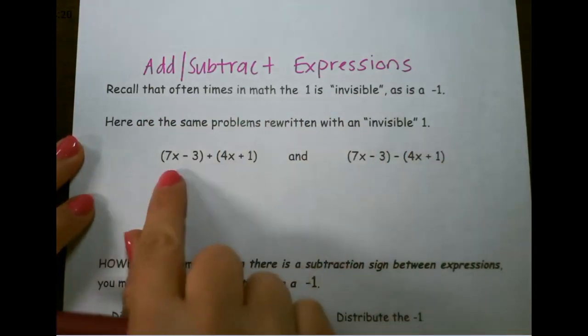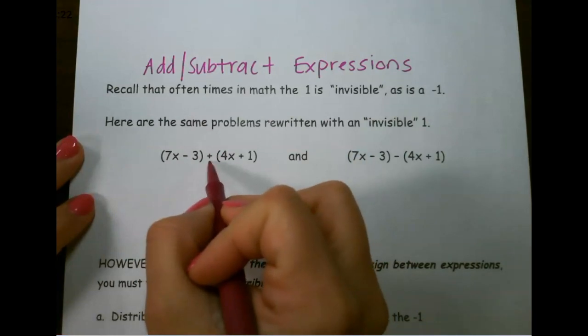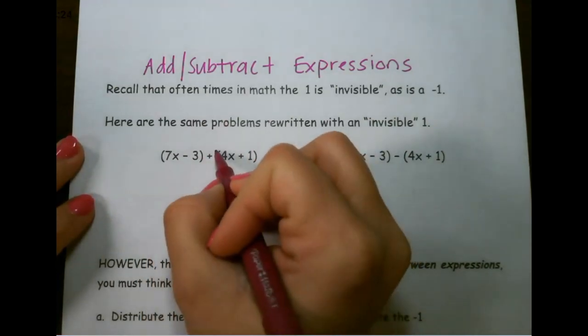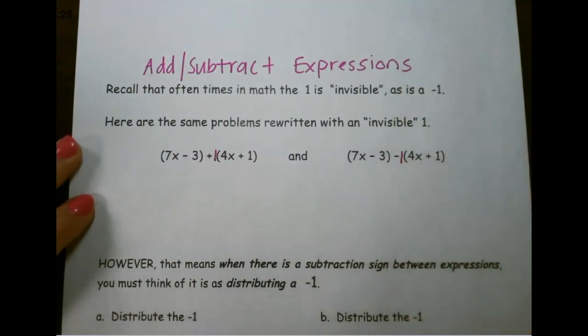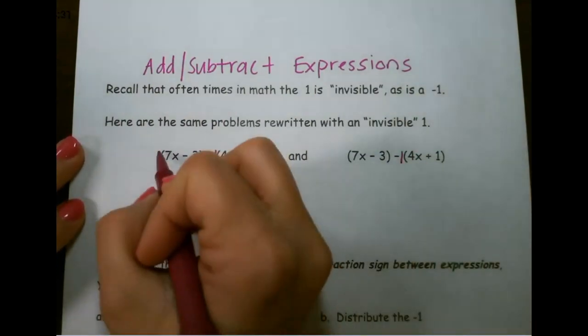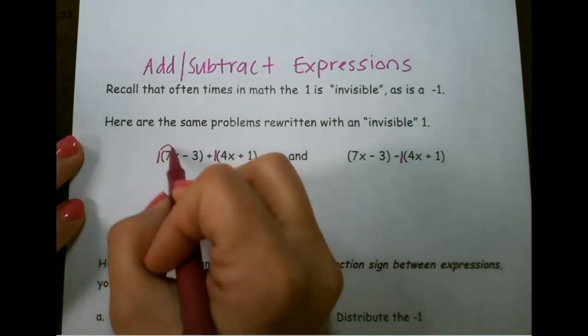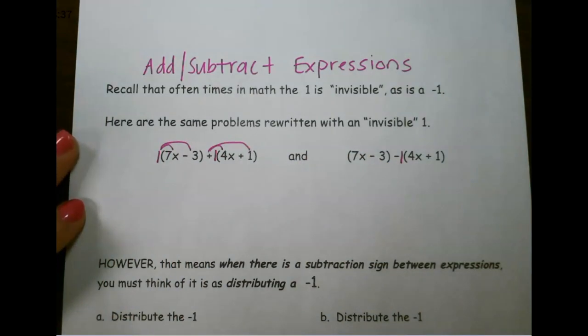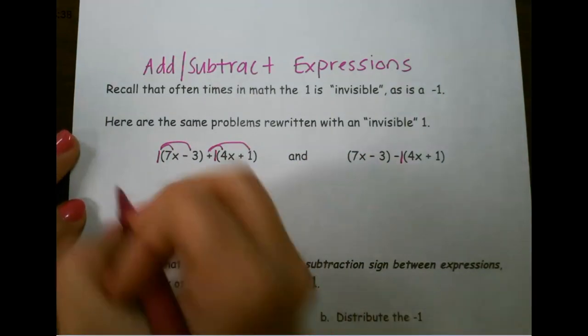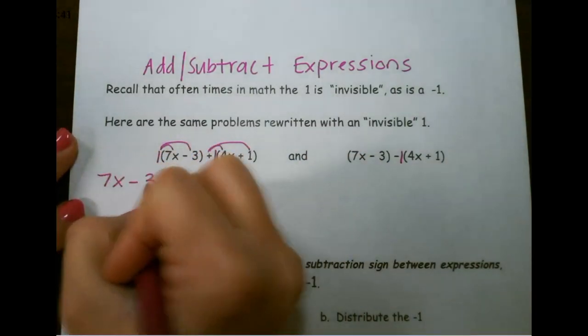So here we have a plus sign in the middle. Notice that there is no 1 here, so it's like an invisible 1, as well as over here. So with this first problem, nothing changes because if I were to distribute a positive 1 to everything on the inside of the parentheses, it would stay the same. So we simply just drop the parentheses.